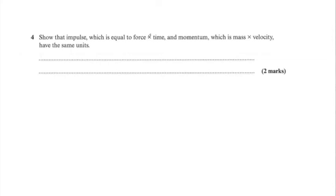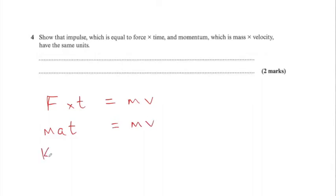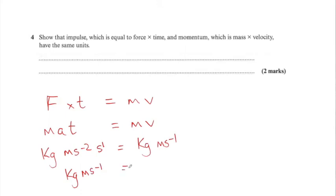Show that impulse — which equals force times time — and momentum — which is mass times velocity — have the same units. Force is mass times acceleration, so impulse is MA times T. The unit of mass is kilograms, acceleration is metres per second squared, and time is seconds. That gives kg·m·s⁻²·s, which simplifies to kg·m·s⁻¹. Momentum is mass times velocity: kg times m·s⁻¹, which is also kg·m·s⁻¹. We have proven it.